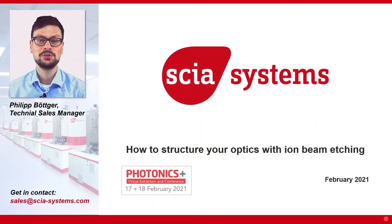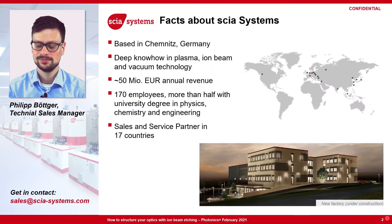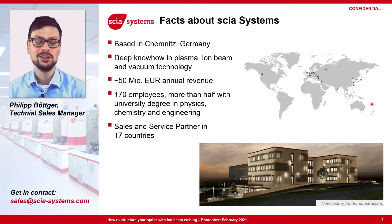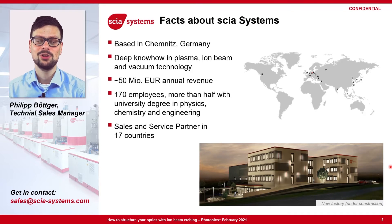Hello everyone, this is Filip Gotke from Skia Systems and I want to introduce to you how you can structure your optics with ion beam etching. Skia Systems is a company based in Chemnitz, Eastern Germany and we are very strong in building equipment for plasma, ion beam and vacuum processes. We have 17 sales and service partners all around the world, which can help you locally with your requirements for optics processing.